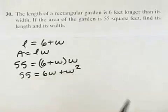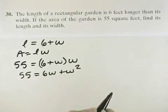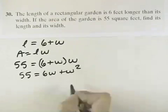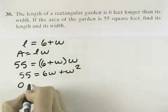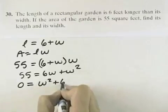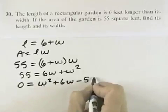Now because of the W squared, I can see this is a quadratic equation. So if I get everything on one side, then I will be able to solve this for W. So I'm going to subtract 55, and I'll have a W squared term, a 6W, and a minus 55.